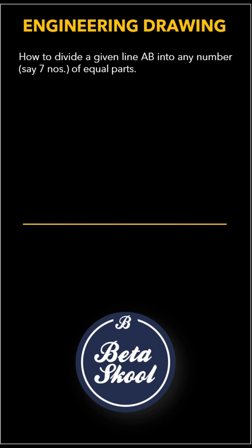First, we take a line AB of any given length and we need to divide this line into seven equal segments.